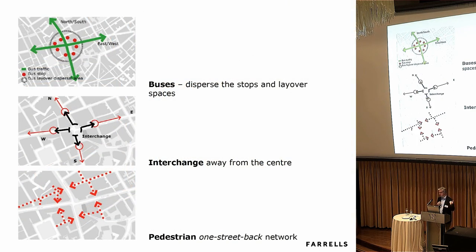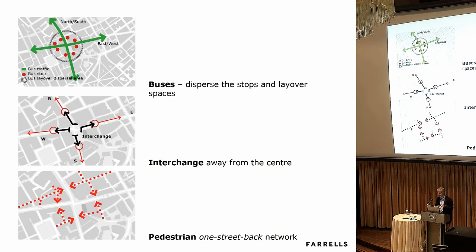There's a whole question about concentration versus dispersal. I get annoyed every time I see a scheme that pushes the bus stops away — the most recent one I've seen is at Old Street, where the buses stop some distance away from the tube station. I can kind of see why that is in terms of traffic flow. But here our advice was that we should disperse as much as possible because of the tightness of the interchange and the tightness of how people would move around. Push the layover spaces away, push the bus stops away from the immediate crossing — and that's also reflected in a second diagram, that we should move those interchanges away from the centre and disperse.